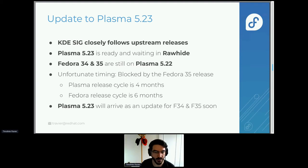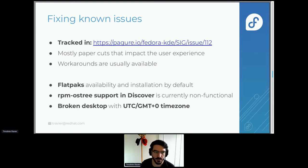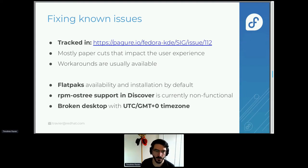Of course, since Fedora Kinoite is Fedora, don't forget it — we'll just get the updates like everybody else when it gets released to Fedora 35. We have a couple of known issues and I'll try to focus on those in the coming months. They're all tracked in the Fedora KDE SIG tracker. They are not all huge issues, though some are blocking for some users. Mostly they are paper cuts — things that impact the user experience and make it not great. Most of the time we have workarounds to make things still work.